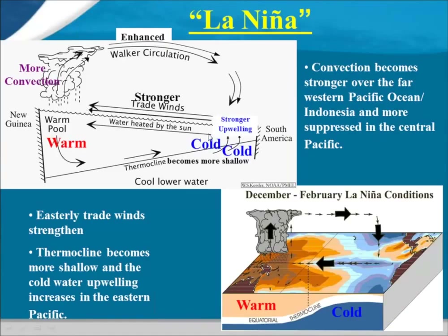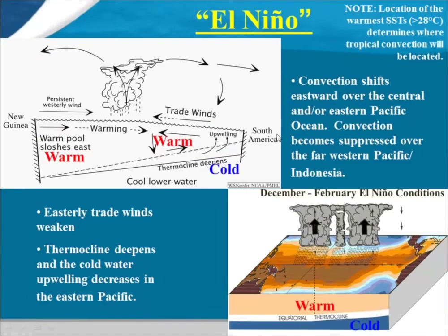I like flipping to the La Niña state because it's essentially an amplified normal state — normal on steroids. The SST gradient is even stronger, the thermocline is closer to the surface, and below-average SSTs extend across the tropical Pacific. Because the gradient between east and west is stronger, the trade winds blow stronger than average, with even more convection over Indonesia and the western Pacific. Our Walker circulation is therefore juiced up. So you can think of La Niña as this reinforced normal state.